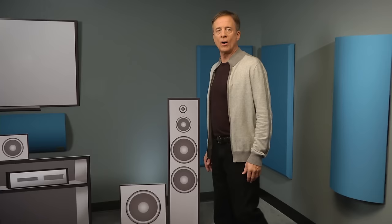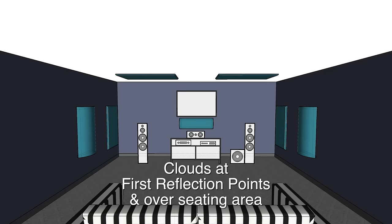All rooms are different, and your room may need more sound control, so let's look at the next group of treatments. The ceiling is a big flat surface area and should be treated. Ceiling absorber panels are called clouds. Two are placed at the ceiling first reflection points and two over your seating area.